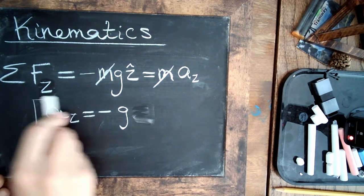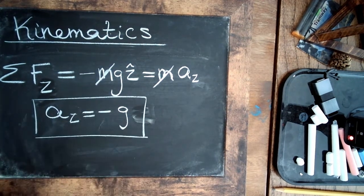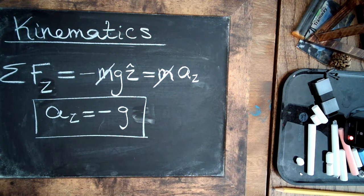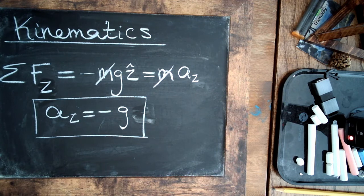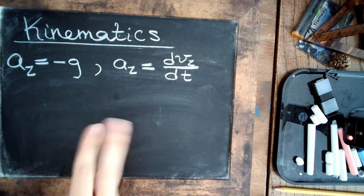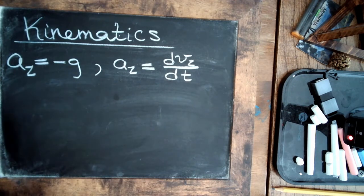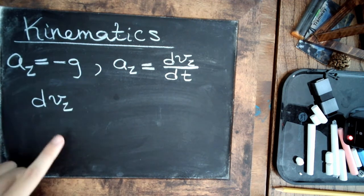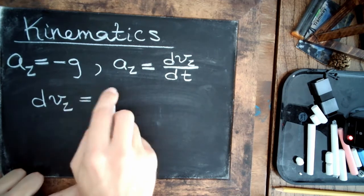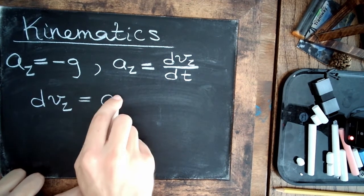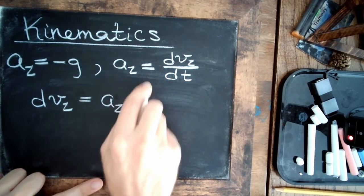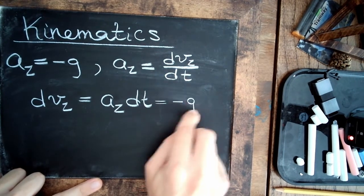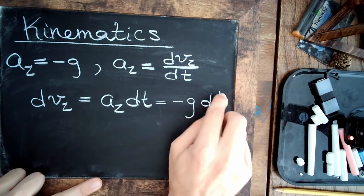And that's it. And from there, we use those derivative relationships to find, therefore, the velocity in the z direction, or up and down, as well as the position as functions of time. So based on this derivative relationship, we can effectively say that the differential velocity in the z direction is equal to az times a little time step dt, which of course would be minus g times a little time step.